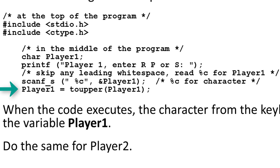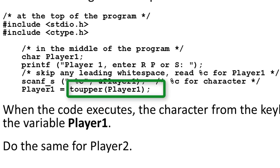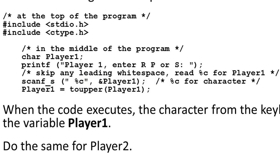Then I can say player1 = toupper(player1). In order to use the toupper function I need to include ctype.h. The toupper function takes whatever is input and converts it to uppercase. The toupper function itself does not change the value of player1 — it takes player1, converts it to uppercase, and returns the uppercase value. For example, if somebody typed a capital R, it returns a capital R; if somebody typed a lowercase r, it also returns a capital R. It is the assignment — the equal sign — that takes the result of toupper and places it back into player1. Then you need to do the same thing for player 2.